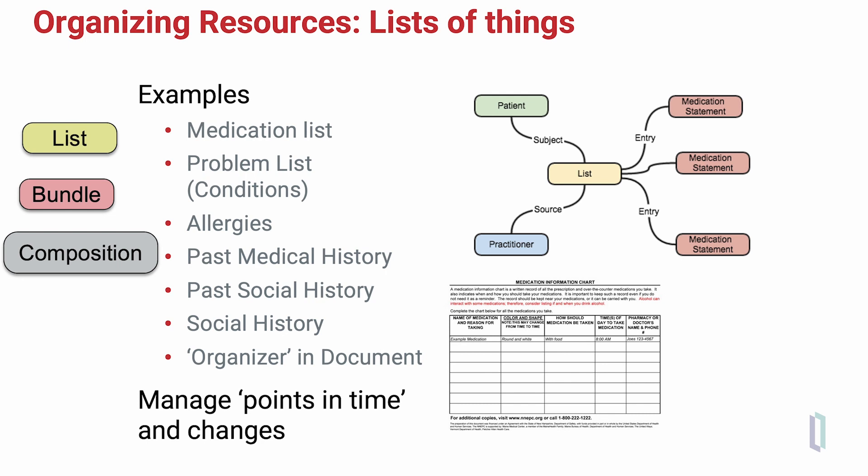That exchange often takes place as a FHIR bundle. The bundle resource is a way to identify a group of FHIR resources that are related in some way, either as a list or document or perhaps a laboratory test result. The FHIR composition resource is used to identify the structure and format of a document that contains FHIR resources as the data for that document.